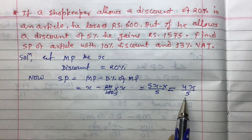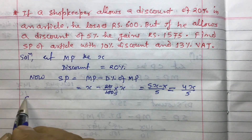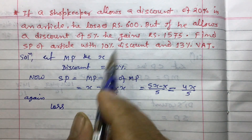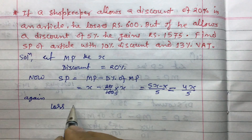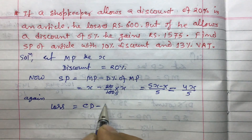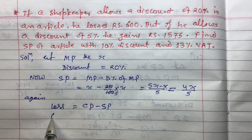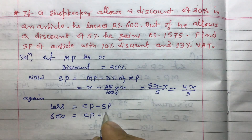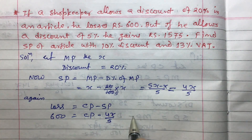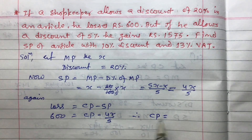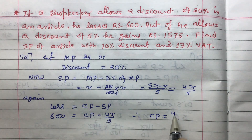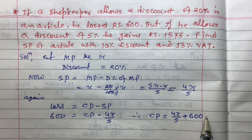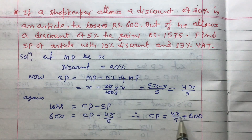We are given that loss equals 600. Loss equals CP minus SP. So 600 equals CP minus 4X by 5. Therefore, CP equals 4X by 5 plus 600. This is the cost price obtained from the first case.